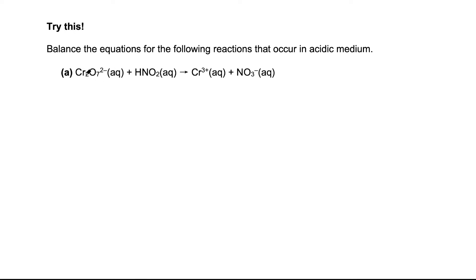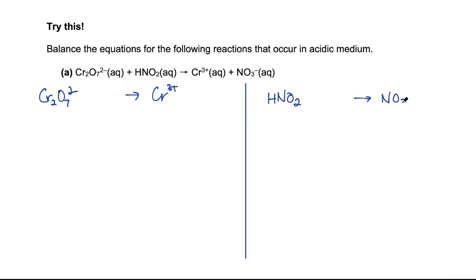Here we have potassium dichromate 6 being reduced to chromium 3+ ion, and nitrous acid being oxidized to nitrate ion. We separate the two half equations. Step 1: balance the atoms first — chromium looks balanced, nitrogen is balanced. Then we balance oxygen by adding 7 H₂O to the reduction half equation.